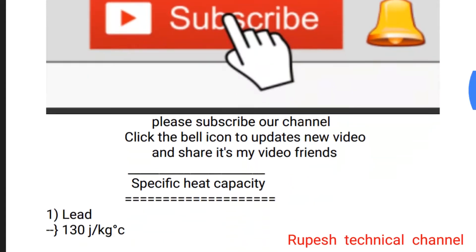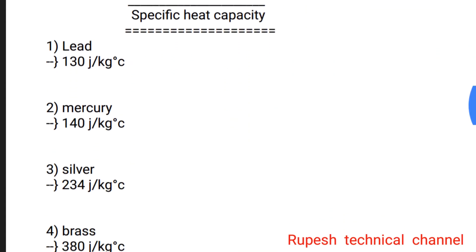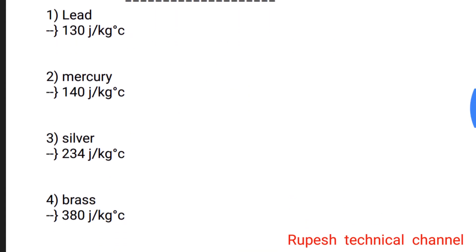Question number 1: Lead — 130 joule per kg degree Celsius. Question number 2: Mercury — 140 joule per kg degree Celsius. Question number 3: Silver — 234 joule per kg degree Celsius. Question number 4: Brass — 380 joule per kg degree Celsius.